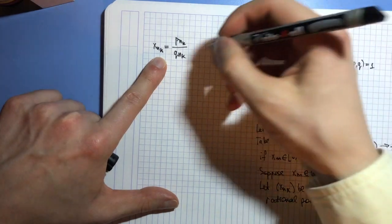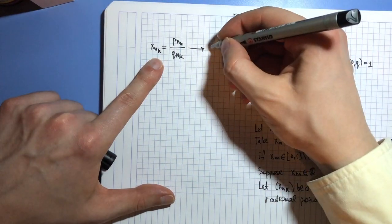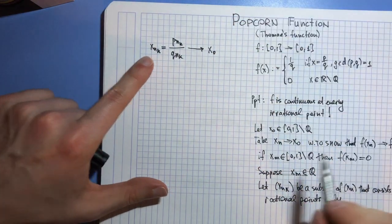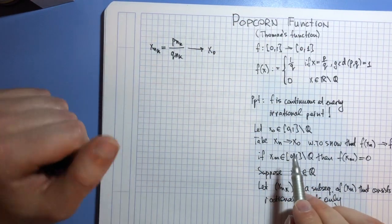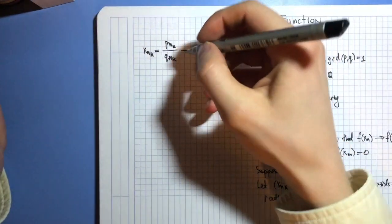And we have that this sequence still tends to x₀, because if a sequence tends to limit, any subsequence must also tend to limit. That's a basic fact from analysis.